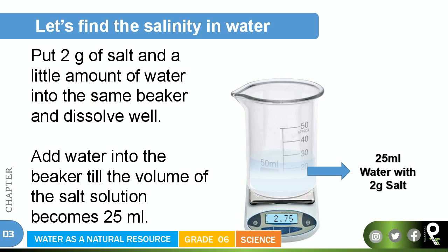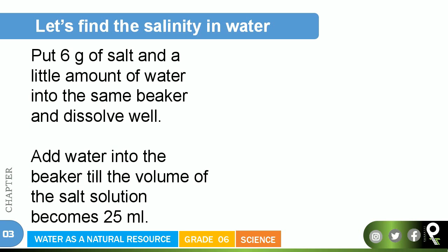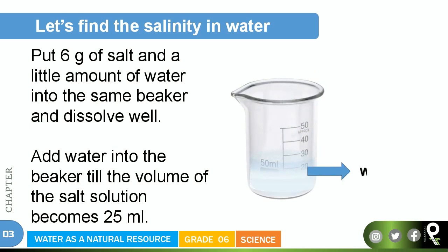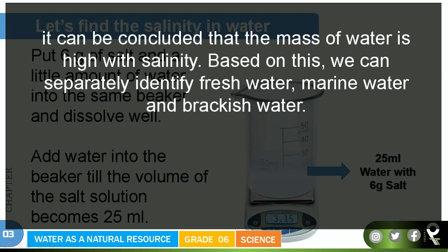Now we put 6 grams of salt with a little water into the same beaker, dissolve it well, and bring the total volume to 25 milliliters again. When we measure it, the mass is now 3.15 grams. So: first without salt — 2.25 grams; second with 2 grams of salt — 2.75 grams; third with 6 grams of salt — 3.15 grams. As saltiness increases, the mass also increases.